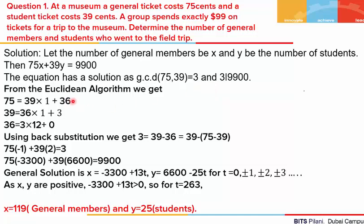Now the Euclidean algorithm is done here. We divide the bigger number by the smaller number and use the division algorithm to write it. Then we divide 39 by 36 and get 39 = 36×1 + 3. In the next step, 36 is divided by 3, so we get 36 = 3×12 + 0, with no remainder. This is where we stop.